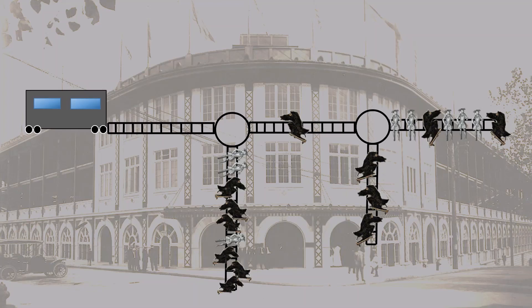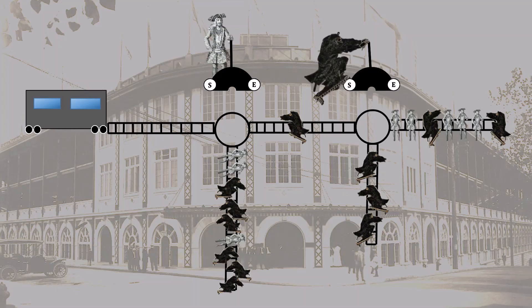The irresponsible trolley company is at it again. There's another train on the loose, and this time we have pirates and ninjas down on the tracks. Fortunately, there is a pirate at one switch station and a ninja at another switch station, and they can influence where the train ultimately goes.